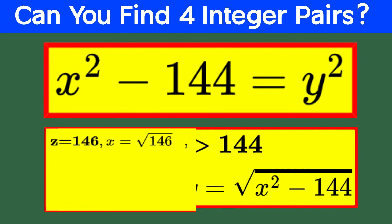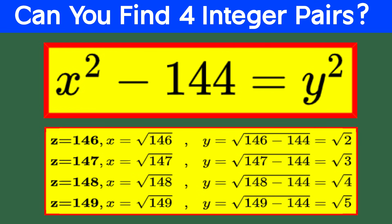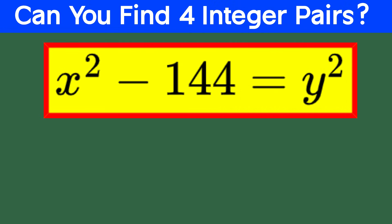For example, if z is 146 then x is square root of 146 and y is square root of 2. Repeat this process for z equals 147, z equals 148 and z equals 149 and voila! You've cracked the case with a casual shrug and a smug grin. But alas, life and math isn't always so kind. Numbers rarely play by our rules, and equations don't always yield easy answers.